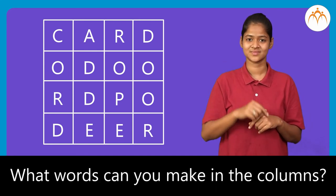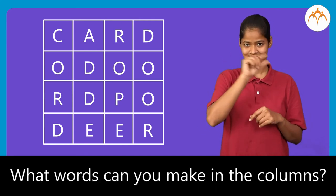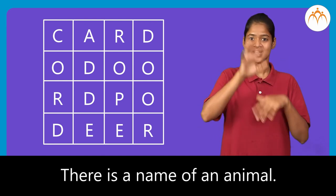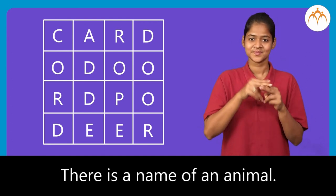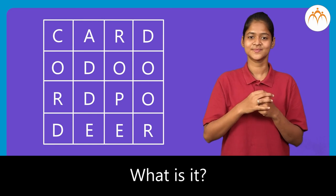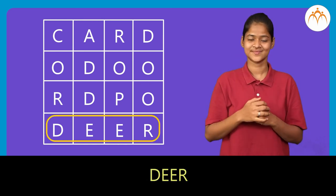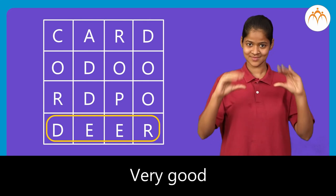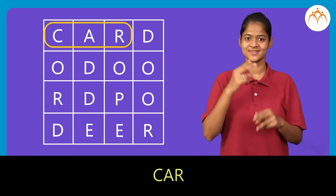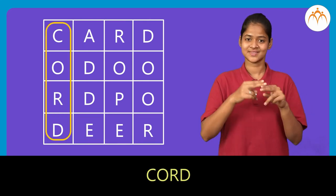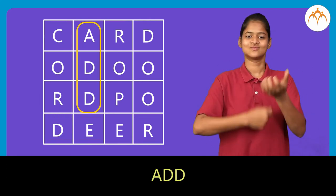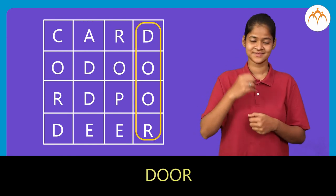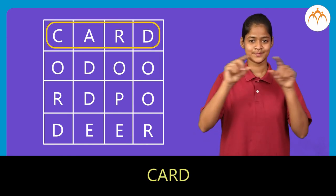What words can you make in the columns? There is a name of an animal. What is it? Deer. Very good. Car, Cord, Add, Rope, Door, Card.